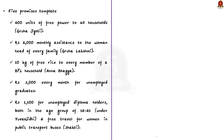Let us begin with the promises made by the Congress party. The Congress party is going to use the five promises template in the upcoming assembly elections, having previously used this strategy in the Karnataka assembly elections. The five guarantees are: providing 200 units of free power to all households; providing rupees 2000 monthly assistance to women heads of every family; providing 10 kg of free rice to every member of BPL households; providing 3000 rupees every month for unemployed graduates; and providing rupees 1500 for unemployed diploma holders in the age group of 18 to 25, along with free travel for women in public transport buses.